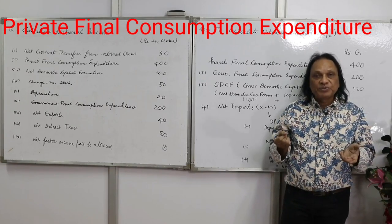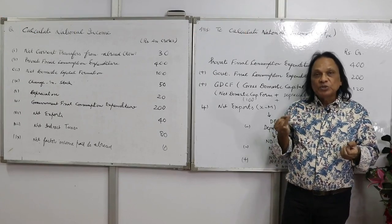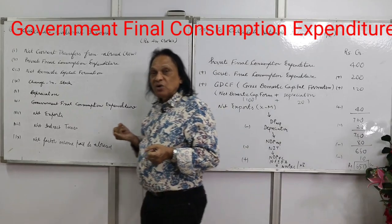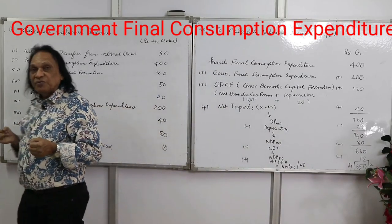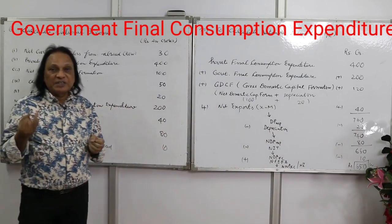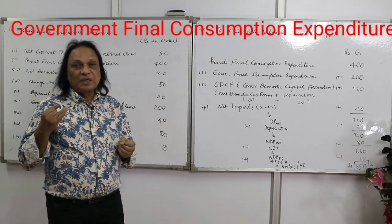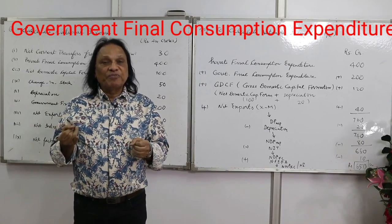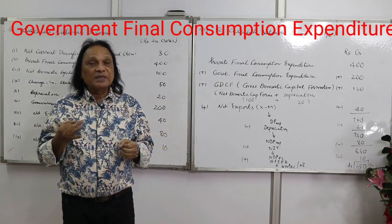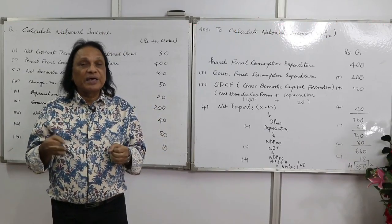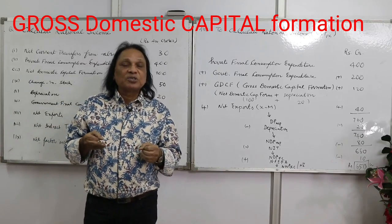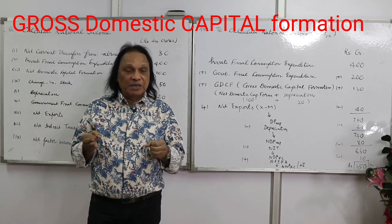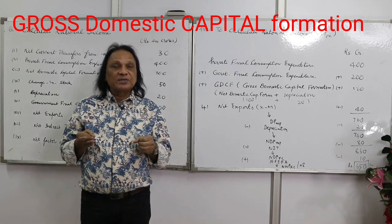We take all the expenditures in the economy. Number one: private final consumption expenditure — this is done by the households on buying all kinds of durable, non-durable goods, and services. Number two: government final consumption expenditure — this is done by the government in construction of roads, street lighting, parks, defense, and administration.